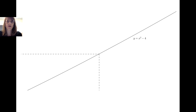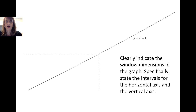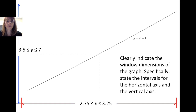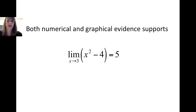It's important when giving graphical evidence in support of a limit that you provide a sketch of the graph on a window very near the point of emphasis, and clearly indicate the window dimensions — the intervals for both the x-axis and y-axis. In this particular graph, x is between 2.75 and 3.25, and the y values are between 3.5 and 7. This helps us identify that as x gets close to 3, the y value is very close to 5. Both the numerical and graphical evidence support that the limit of x squared minus 4 as x approaches 3 is equal to 5.